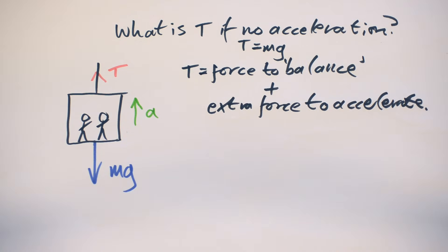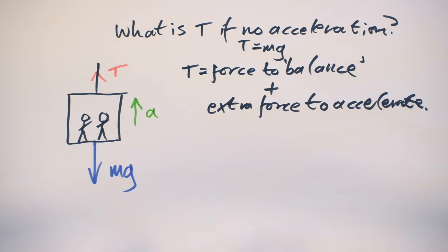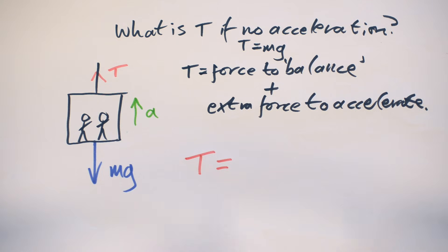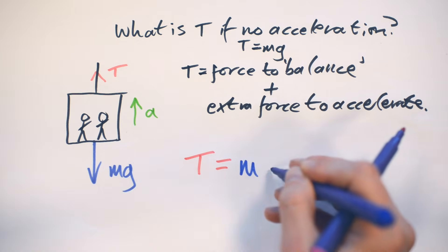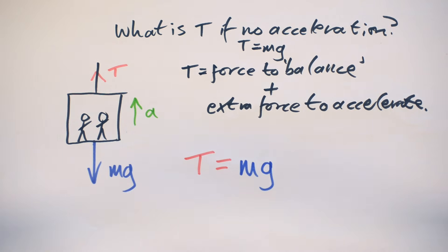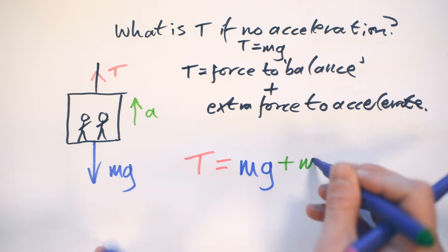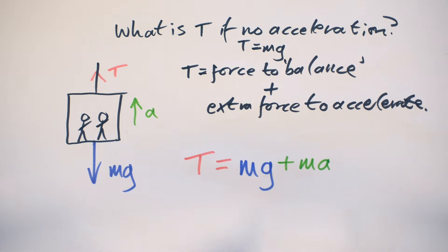What does it look like in reality? Well, we can say that T equals Mg, that's the force needed to balance, plus a bit of extra force to help it accelerate upwards.